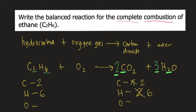And lastly, we need to count oxygen. On the left side we have 2 oxygens. On the right side, we have 2 times 2, that's 4, plus 3 times 1, that's 3. So 4 plus 3 is a total of 7 oxygens on the right side. To balance oxygen, we multiply O2 by 7/2, because 7/2 times 2 equals 7. So oxygen is already balanced.